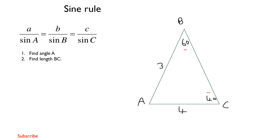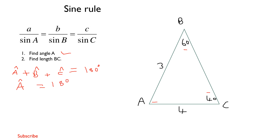The first question asks us to find angle A. We know that the sum of angles in a triangle must add up to 180°. Angle B and angle C are already given. So we calculate: angle A = 180° minus (angle B + angle C), which is 180° minus (60° + 40°).